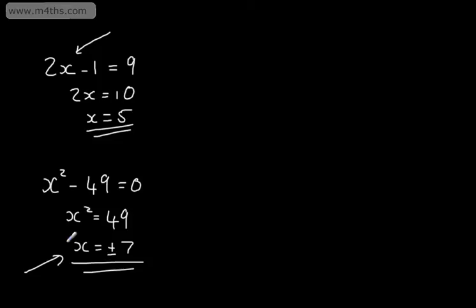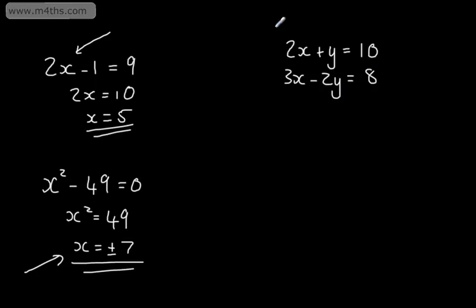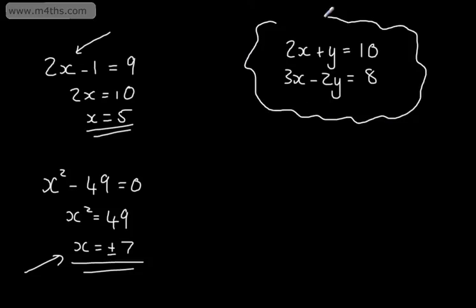We're now going to look at solving simultaneously where we have two unknowns. An example might be 2x plus y is equal to 10, and 3x minus 2y is equal to 8. So here we have two equations and two unknowns. If we have two unknowns, we need at least two equations. We could use trial and error, but generally speaking, the techniques we use now would be different — it's not possible to simply keep substituting numbers in to find combinations that work.